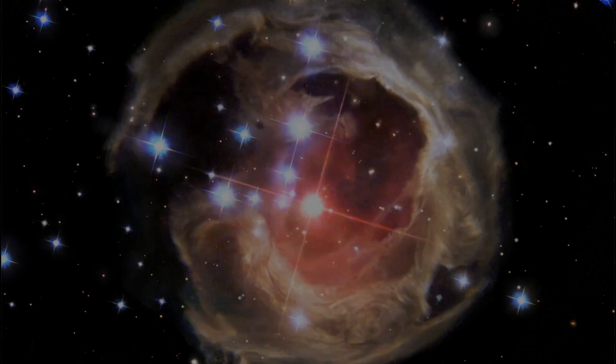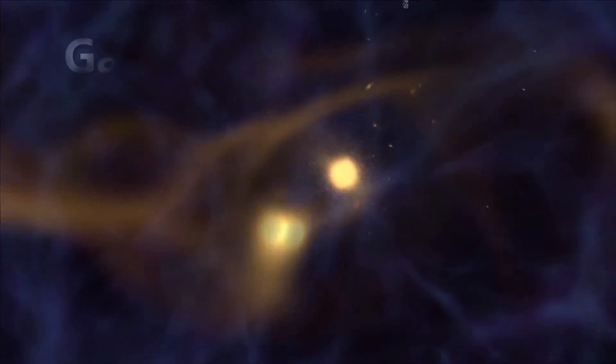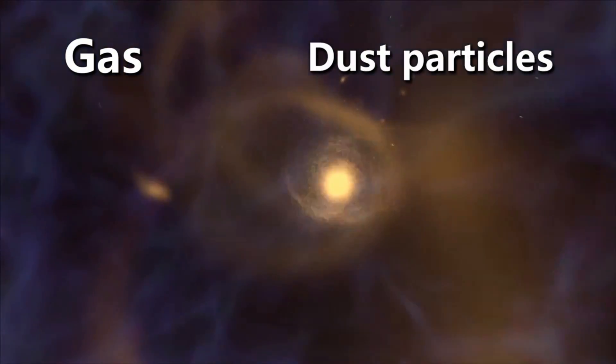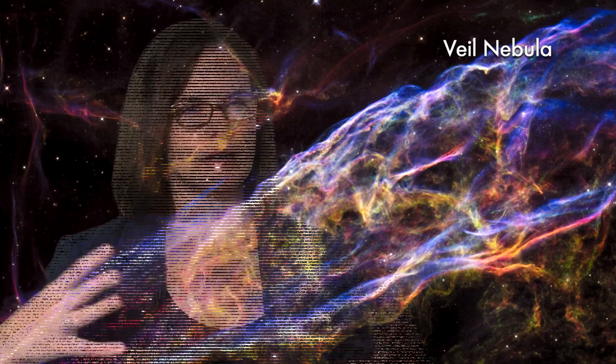In space, you have this collection of diffuse gas and dust particles. It's just sort of everywhere in space. Occasionally, it comes together through gravity. It's attracted to itself, basically. And so you get these giant molecular clouds, they're called, these big nebulae.